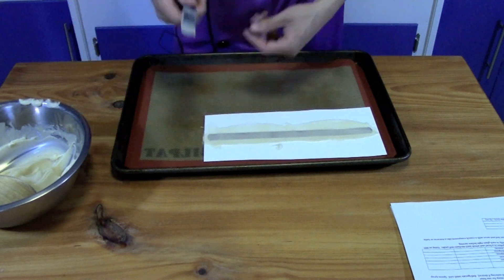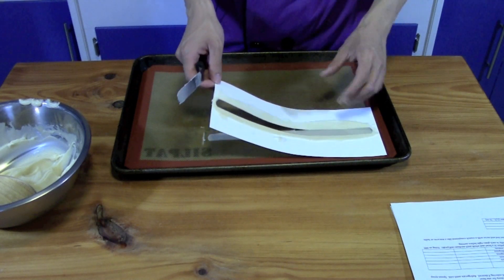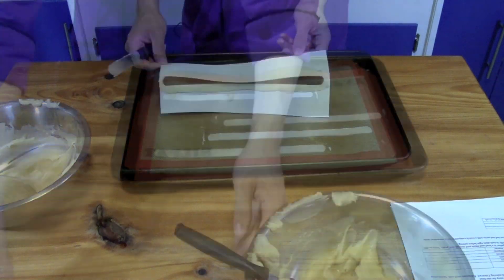Now thinner tuile cookies are more elegant, but thicker ones are a little bit more sturdy. Whichever way you decide to make them, make sure you make them all about the same size.